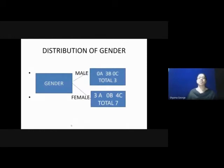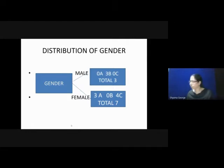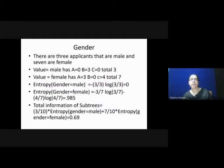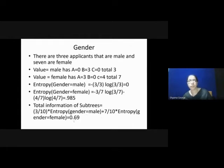When we consider the distribution of attribute Gender, values are Male and Female. There are 3 records with value Male: 0 in class A, 3 in class B, 0 in class C. For Female, there are 7 records: 3 in class A, 0 in class B, 4 in class C. Entropy of Gender-Male = minus 3/3 log₂(3/3) = 0. Entropy of Gender-Female = minus 3/7 log₂(3/7) minus 4/7 log₂(4/7) = 0.985. Total information of subtrees = 3/10 × entropy(Gender-Male) + 7/10 × entropy(Gender-Female) = 0.69.